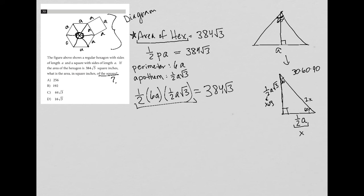So I'm going to simplify this left-hand side. So I'd have 1/2 times 6, which is 3, 3 times 1/2, which is 3/2, so I'll have 3/2. A times A is A², and I still have a √3, is equal to 384√3. So then I can divide by √3 on both sides to make that easy and get rid of that. So now I have 3/2 A² equals 384.